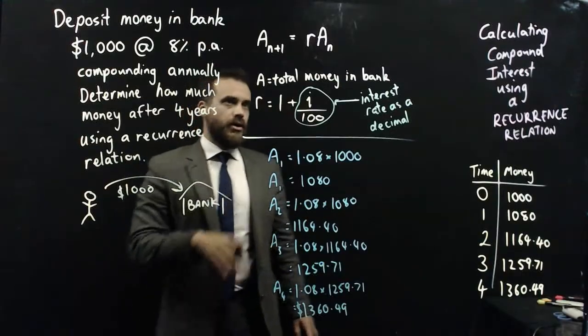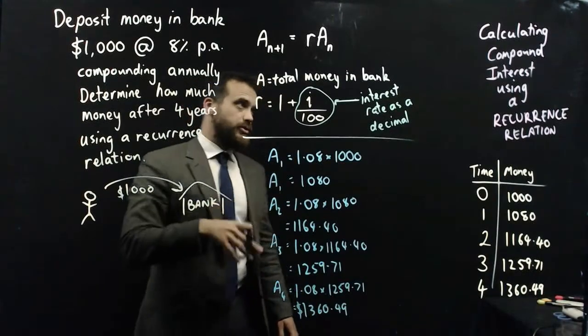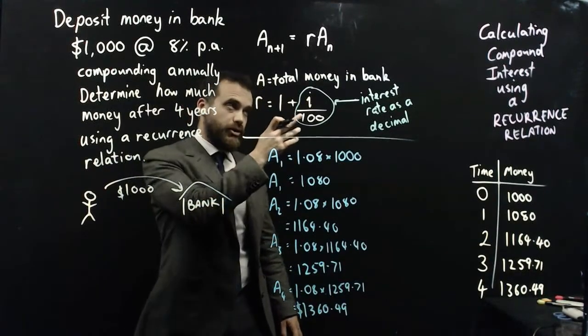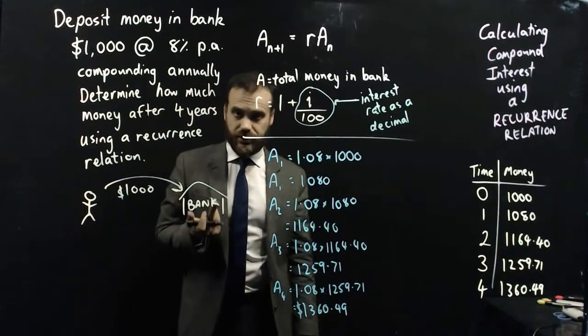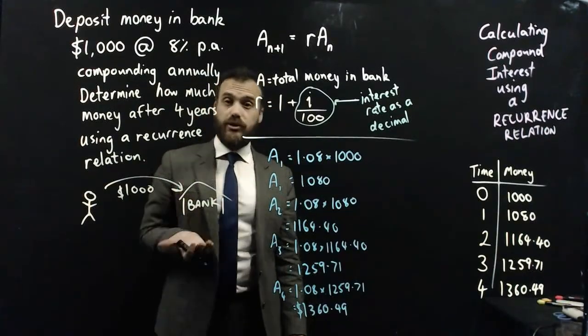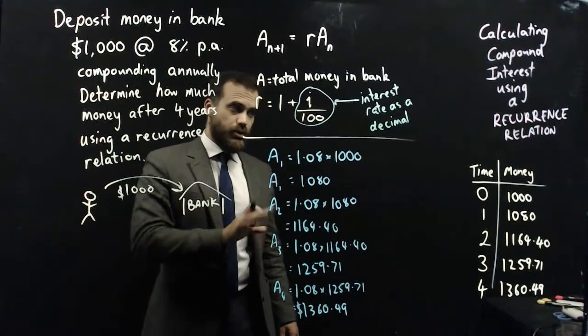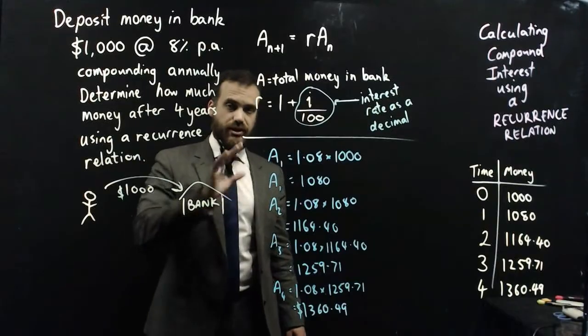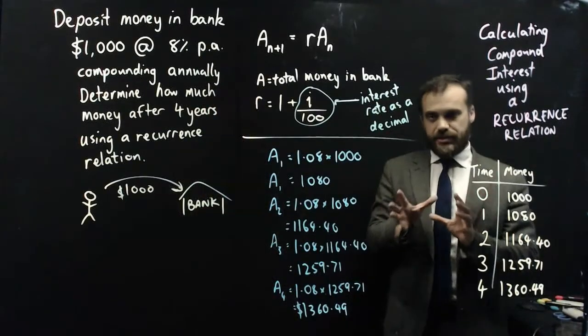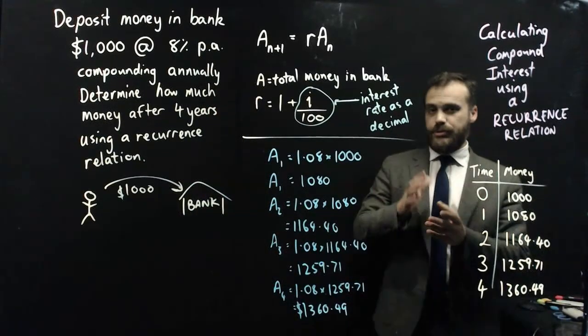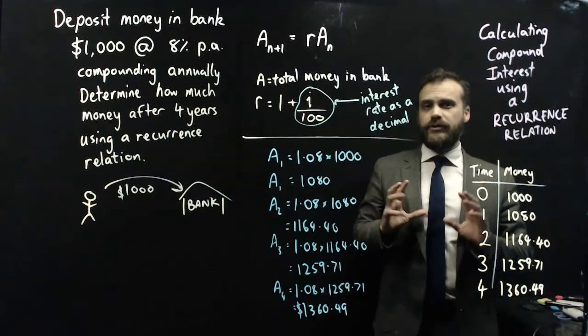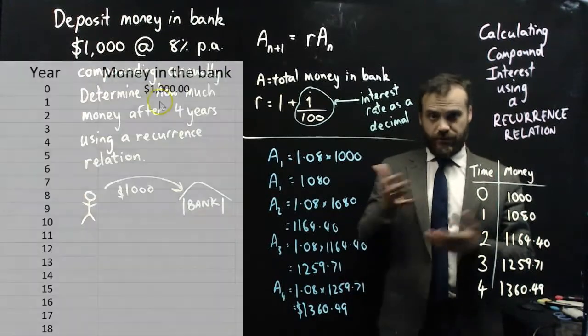What have we done? We've created a recurrence relation, and then we've used that recurrence relation to calculate compound interest. There is a perfectly good compound interest formula that I would argue is more efficient than this. So why on earth would you want to do it this way? Probably the best reason to do it this way is because of spreadsheets. People in finance love spreadsheets for a very good reason.